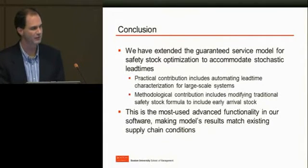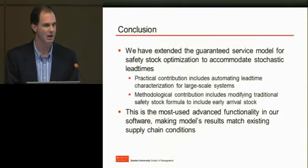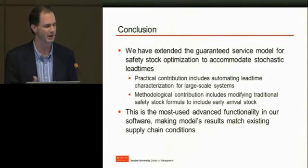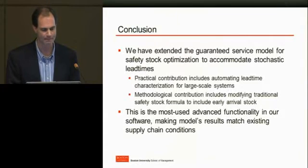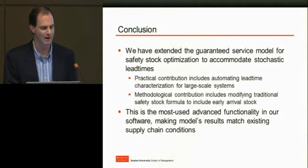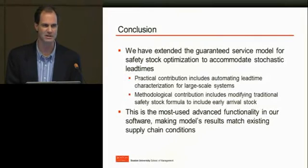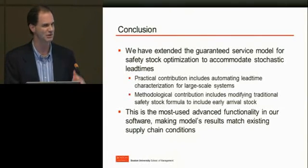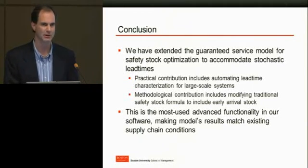To conclude: we've extended the guaranteed service model for safety stock optimization to accommodate stochastic lead times. We have the real practical contribution of automating this process in a repeatable and scalable way so that companies can truly deploy it. Methodologically, we've refined how we calculate different types of inventory, including the introduction of early arrival stock. This turns out to be probably the most advanced and most used advanced functionality of the guaranteed service model inventory tools we have — in part because it's one of the easiest to use, and because it allows us to most closely match the real-world constraints within the companies deploying the solution.